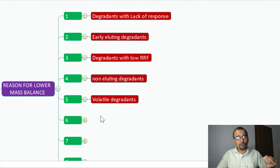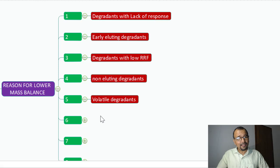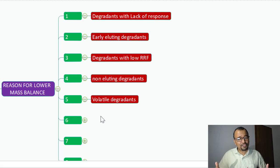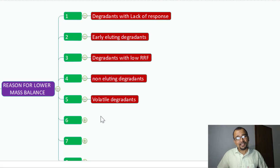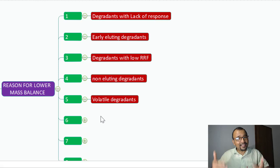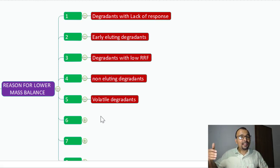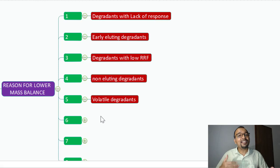Volatile degradants. If you are treating the sample solution with thermal treatment and there are degradants which are volatile or gaseous in nature, they will easily escape out of the sample solution during the treatment itself. You will not have any chance to detect those volatile compounds during chromatography, as they have already escaped your sample solution, resulting in a loss of mass.